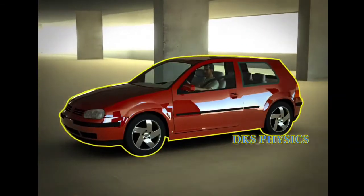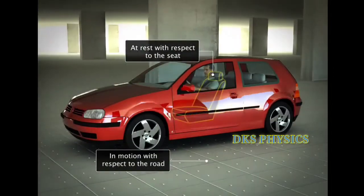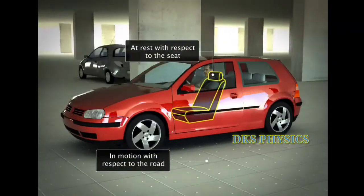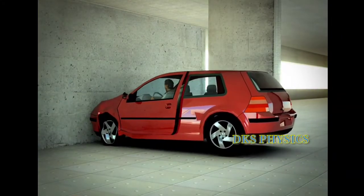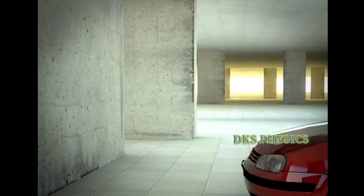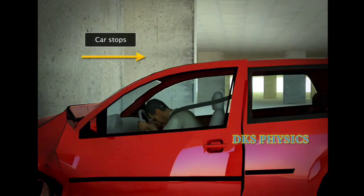When a car is moving, we are at rest with respect to the seat, but moving along with the car with respect to the road. In the unfortunate event of a car crash, the car may stop suddenly. Even when the car stops, our body tends to continue in the same state of motion.